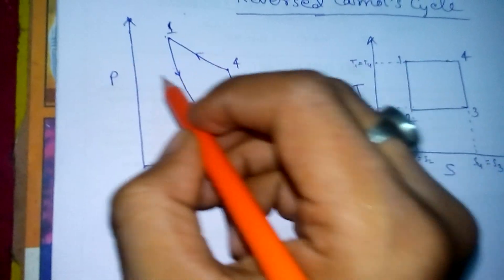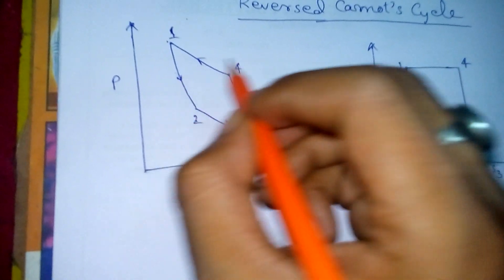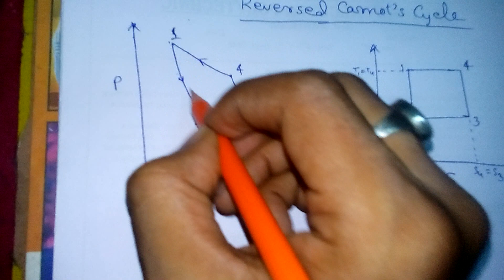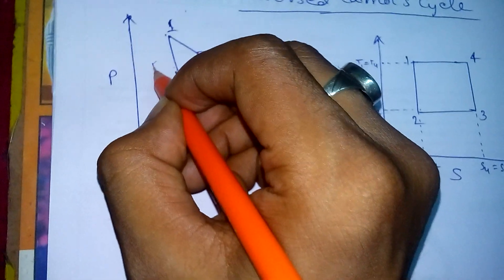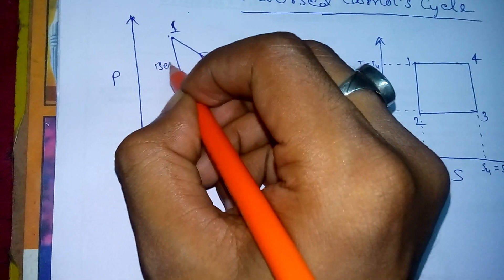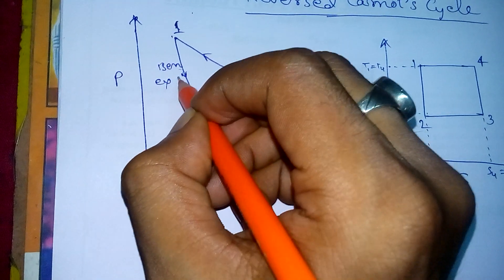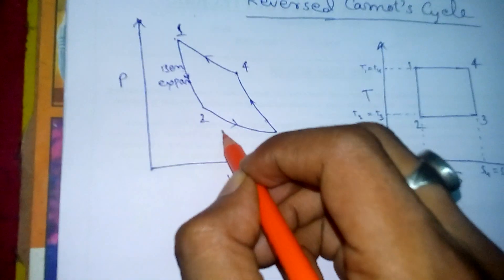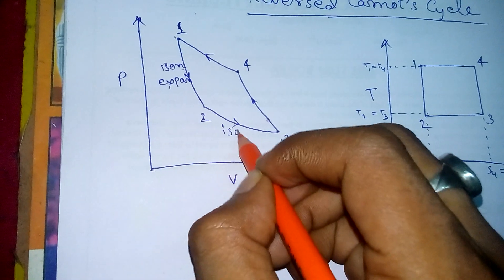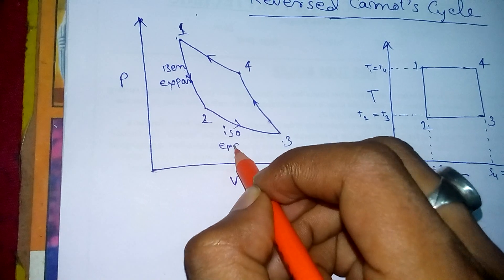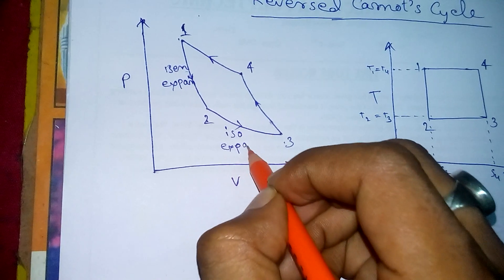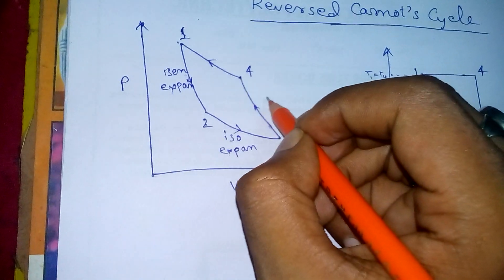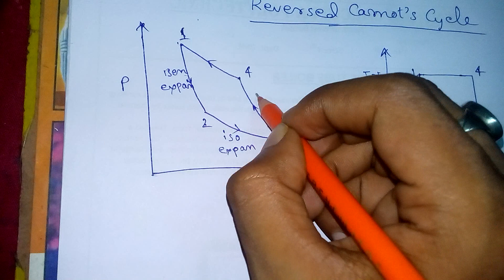Looking at the four processes: process 1 to 2 is isentropic expansion, and process 2 to 3 is isothermal expansion. Process 3 to 4 is also isentropic expansion — sorry, let me clarify: 1 to 2 is isentropic expansion, and 2 to 3 is isothermal expansion.